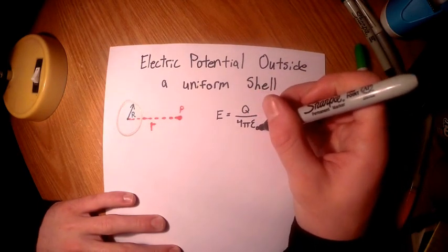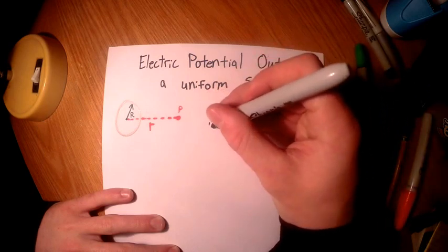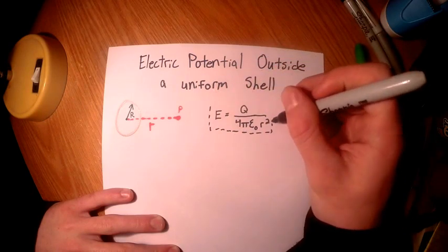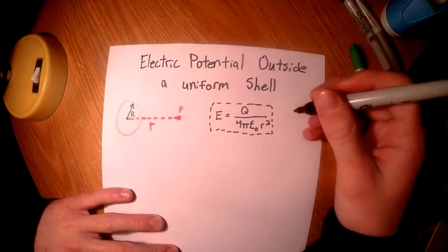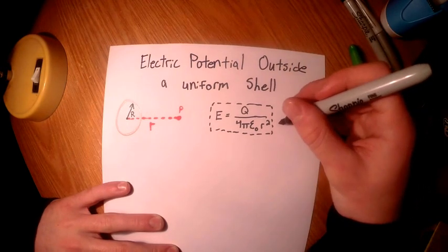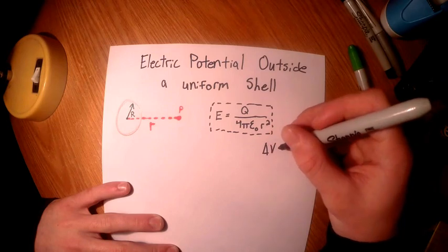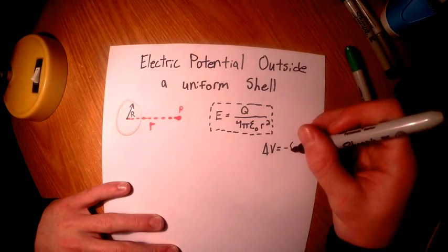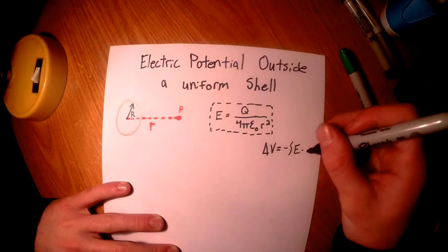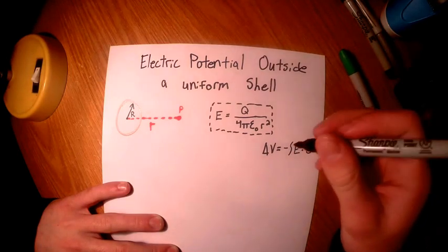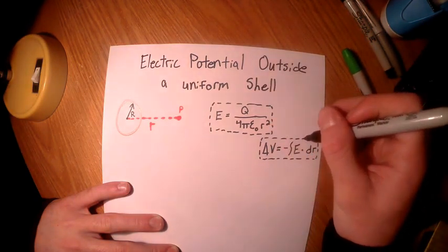Here we're setting up the electric field equation, which we're going to use later on. E is equal to Q over 4 pi epsilon naught r squared. Next, we're going to be using the formula from the yellow sheet: delta V is equal to the negative integral of E times dr.